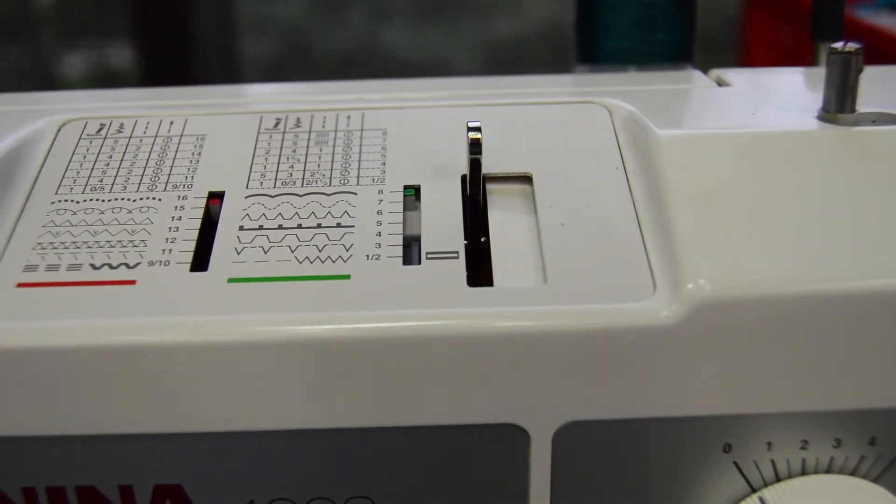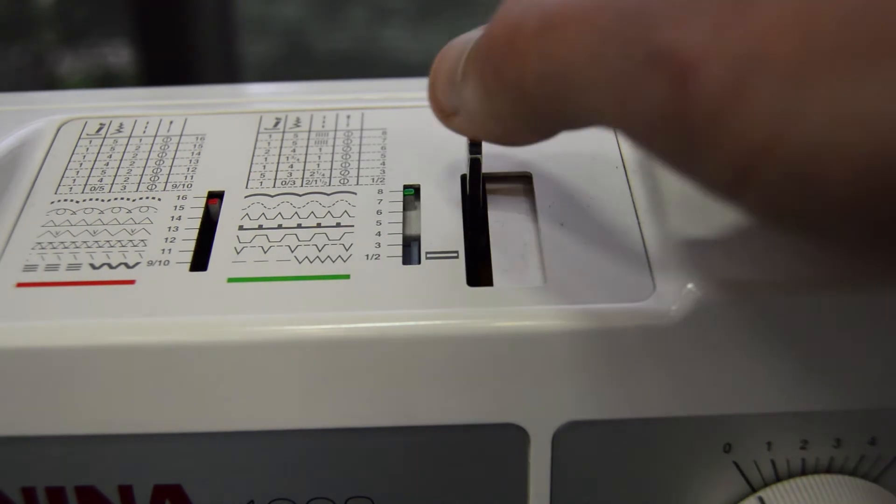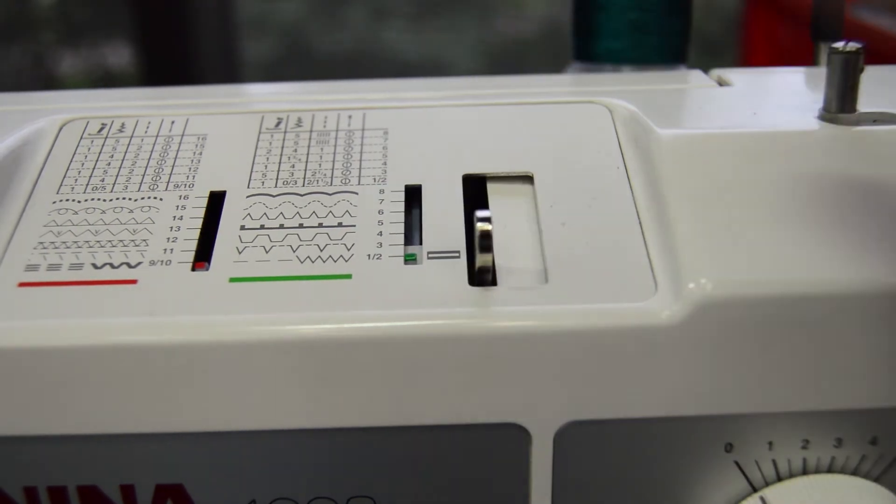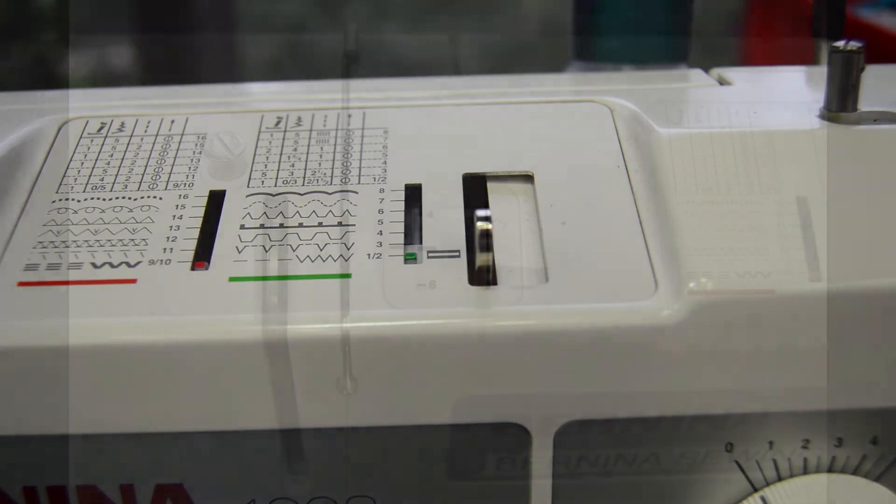Now look at the top of the machine. We see the red-green selector lever which can be pushed to the right and moved up and down to change stitches.